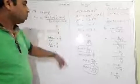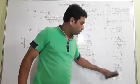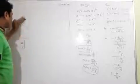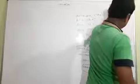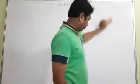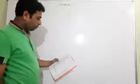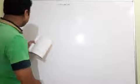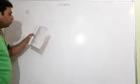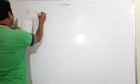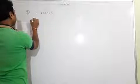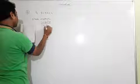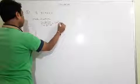Hope that is correct. If the calculation is right the answer will be correct. Now question 8: if 3 cot a is equal to 4, check whether 1 minus tan squared a upon 1 plus tan squared a is equal to cos squared a minus sin squared a or not.